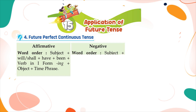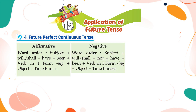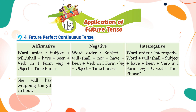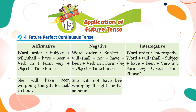Negative word order: subject plus will or shall plus not plus have plus been plus verb in first form plus -ing plus object plus time phrase. Interrogative word order: interrogative word plus will or shall plus subject plus have plus been plus verb in first form plus -ing plus object plus time phrase, question mark. Example: She will have been wrapping the gift for half an hour.